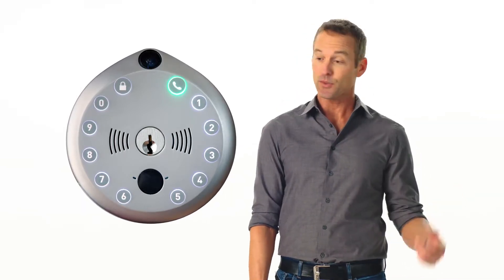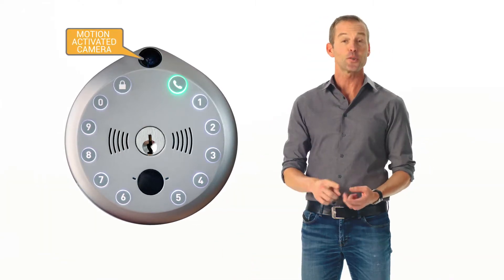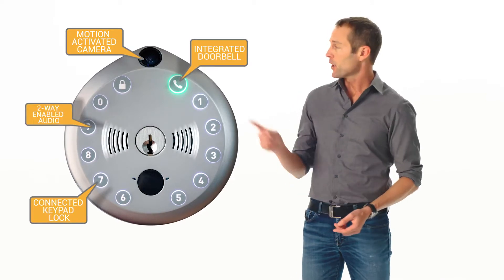Now, remember those individual components on that other lock? They're all right here in one beautifully seamless design called Gate. The camera, the doorbell, the keypad. It also has two-way audio, built-in Wi-Fi, and yes, you can even handle one of those things called a key, just in case you want to go old school.